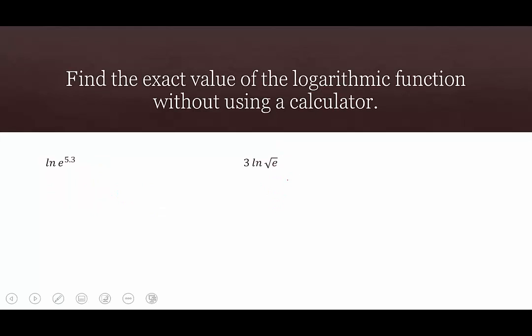In our last two examples we'll look at the natural log. Remember, natural log is a logarithm — it's just that its base is unusual (base e). Here we have ln of e to the 5.3. Since we already have an exponent, we pull the 5.3 out in front: 5.3 times ln of e. ln of e is log base e of e, which equals 1. So we have 5.3 times 1, which simplifies to 5.3.